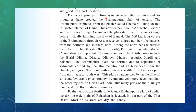River Brahmaputra and its tributaries have created the Brahmaputra plain of Assam. Brahmaputra originates from the Chemayungdung Glacier, located in the Tibetan Plateau. It enters India in Arunachal Pradesh under the name Lohit, then flows through Assam and Bangladesh. In Bangladesh, it meets river Ganga, and they join together and finally fall into the Bay of Bengal.